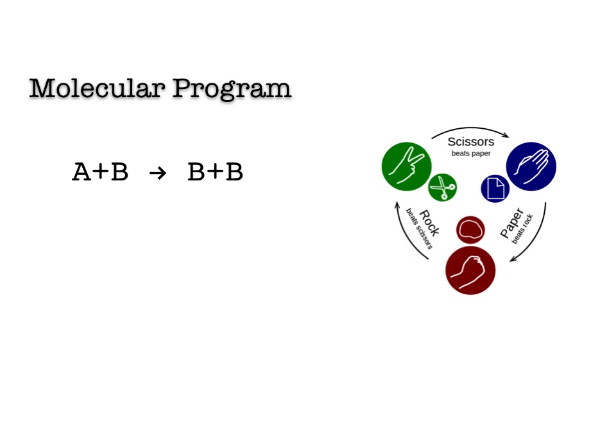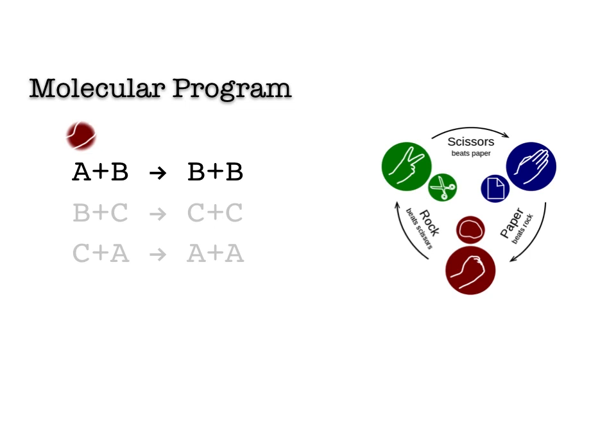To program a new chemical oscillator, we started with this molecular program. We can think of it as kind of playing rock, paper, scissors in chemistry. If we think of A, B, and C as rock, paper, and scissors respectively, the first instruction says that paper beats rock, the second that scissors beats paper, and the third that rock beats scissors. Because they beat each other in this cycle, the overall system has this repeating periodic behavior: A, B, C, A, B, C, and so forth.